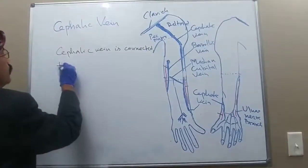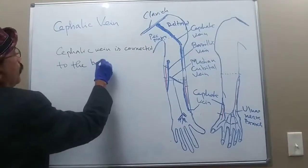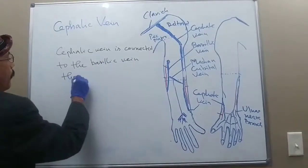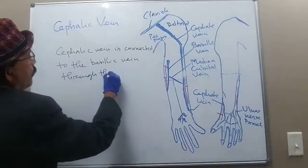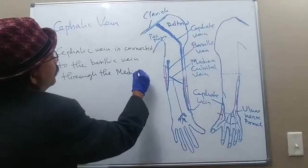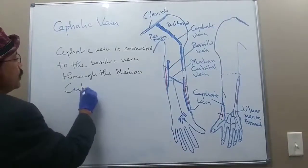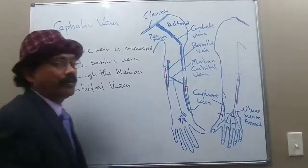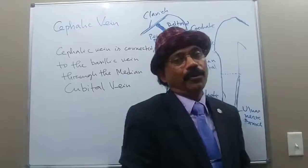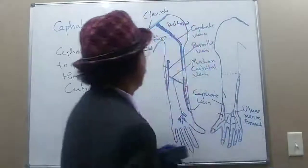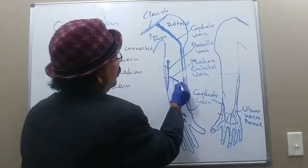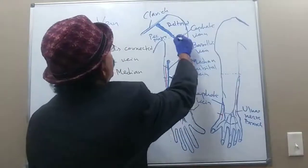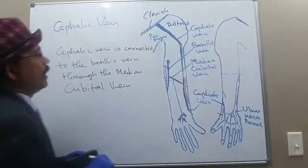The cephalic vein is connected to the basilic vein through the median cubital vein, which is the most preferred and most chosen vein for venipuncture. The cephalic vein ends up in the axillary vein.